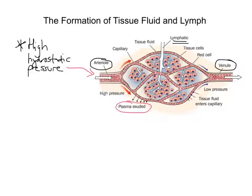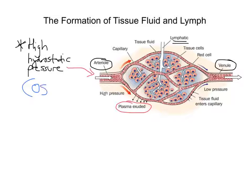The job of tissue fluid is to surround all the cells, allowing exchange by diffusion and facilitated diffusion — transporting oxygen and nutrients from the blood to the cells, and carrying carbon dioxide and waste products from the cells to the blood. Tissue fluid is a result of an interplay between two things: not just the hydrostatic pressure, but also osmosis.